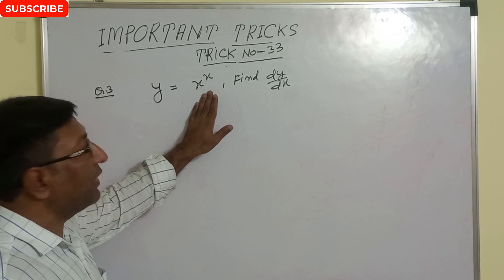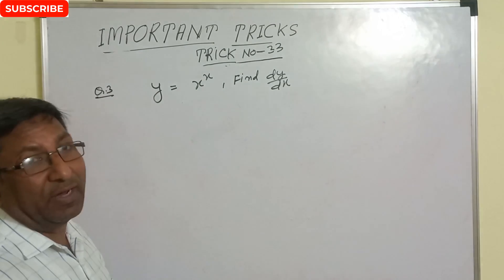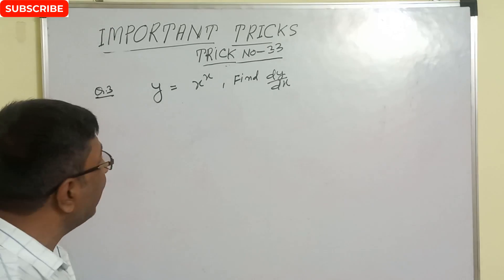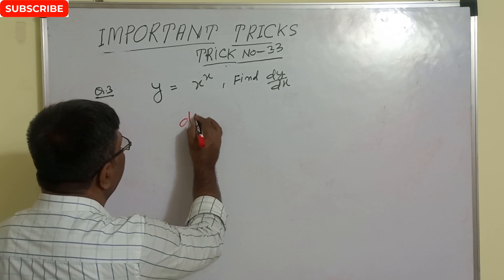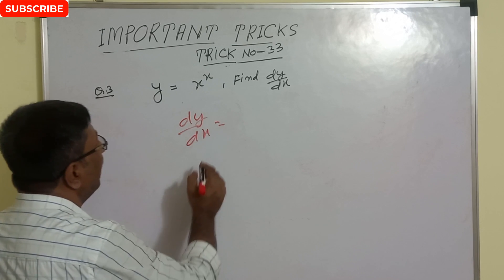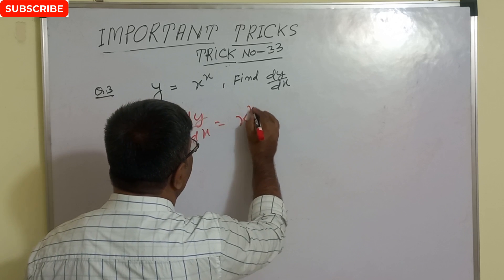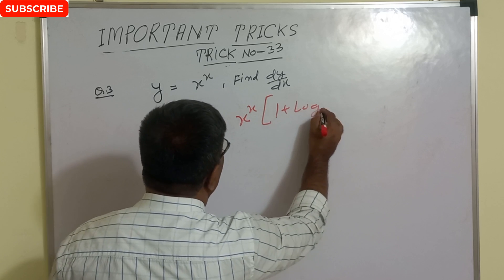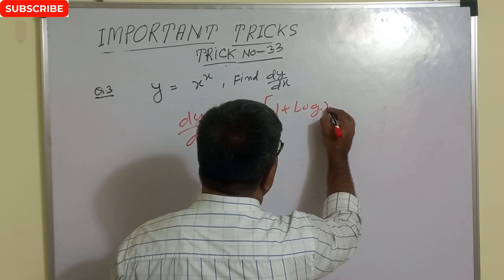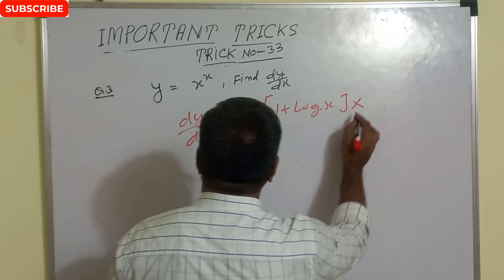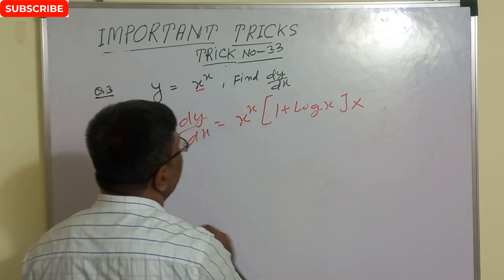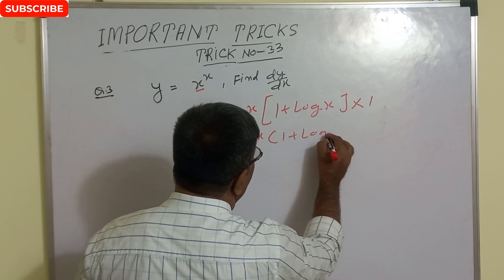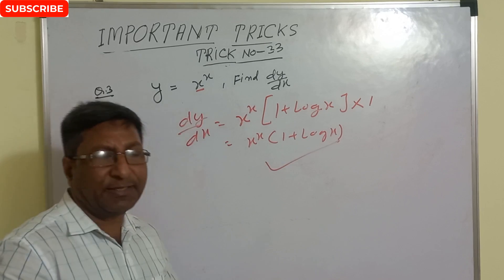y equals x to the power x — find dy/dx. For this type of question we have a very simple technique: dy/dx equals the whole function x to the power x, multiplied by (1 plus log x), multiplied by the derivative of x, which is 1. So our correct answer is x^x into (1 plus log x).